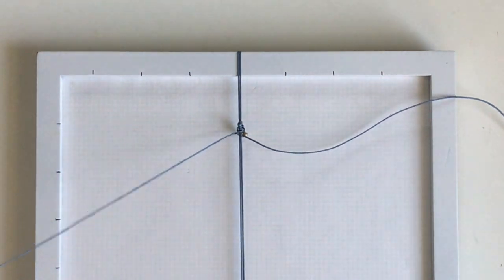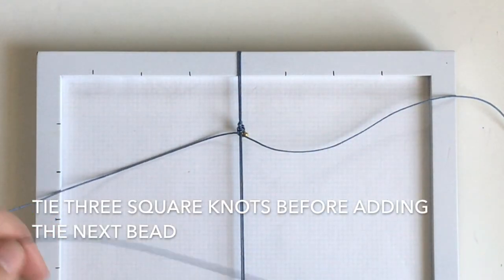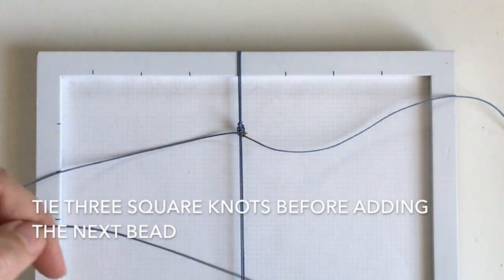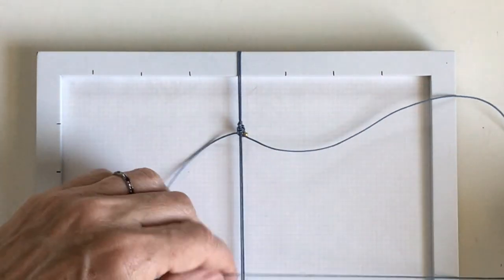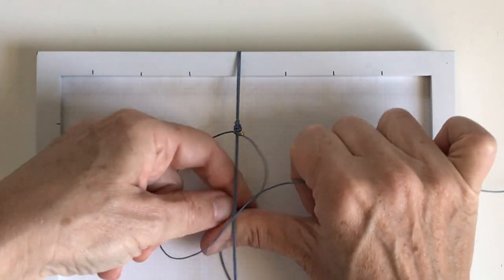And then we're going to go the other way. So from now on you can always tell which side you're making the four with because it has the beads on it. But you're not adding a bead every time. So we do the four. Bring the other side up and through.